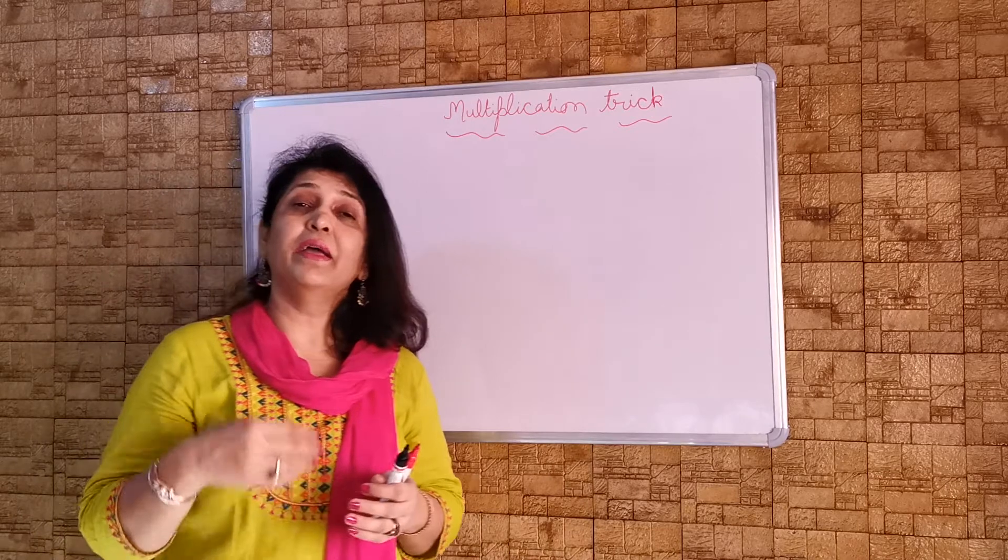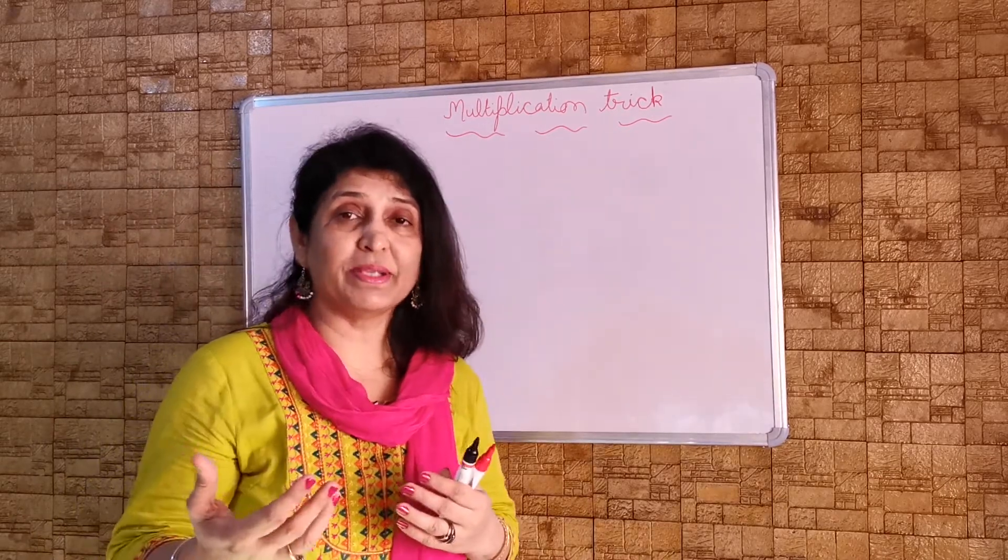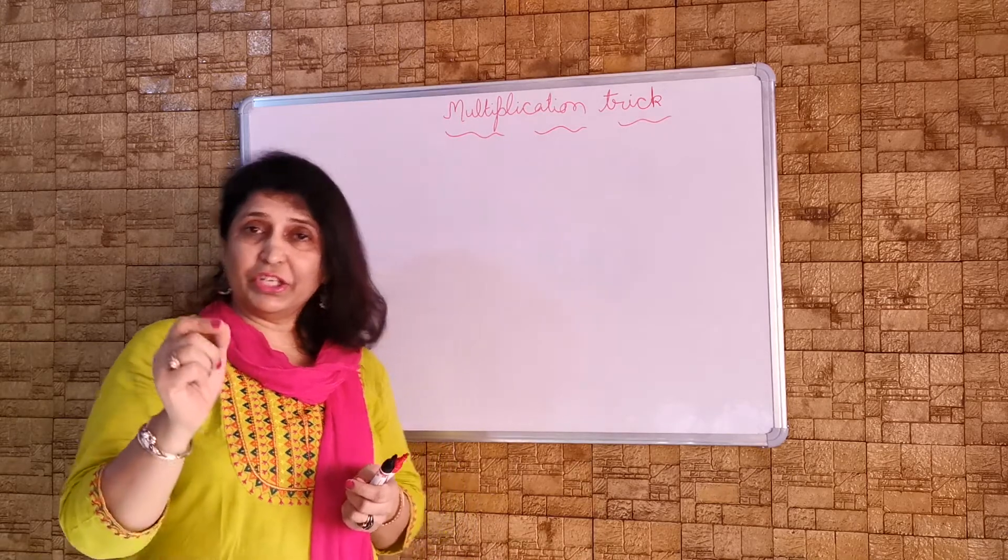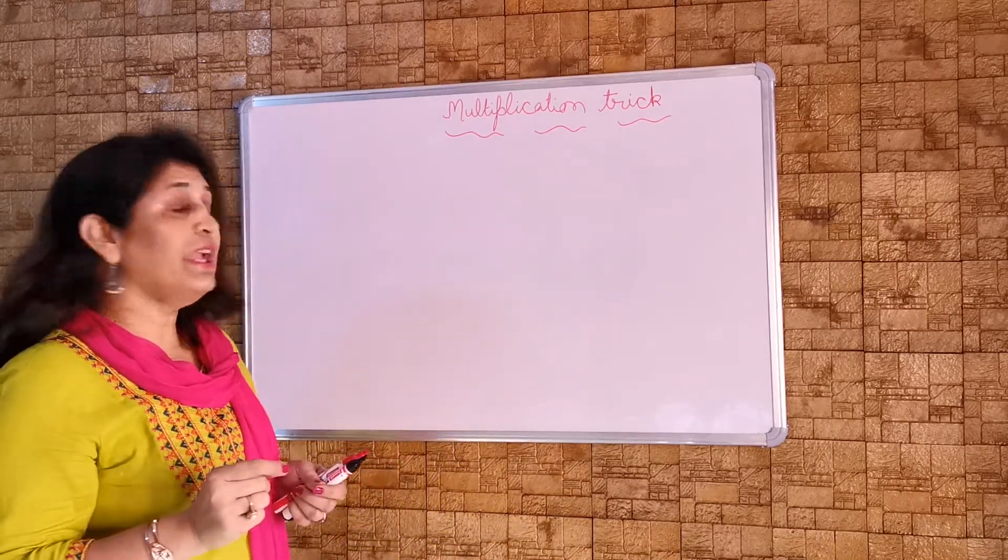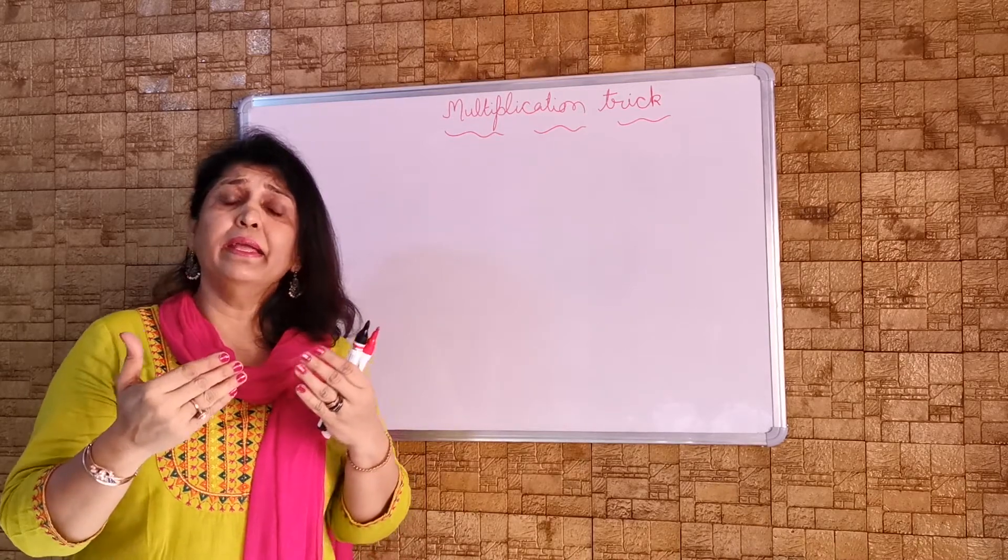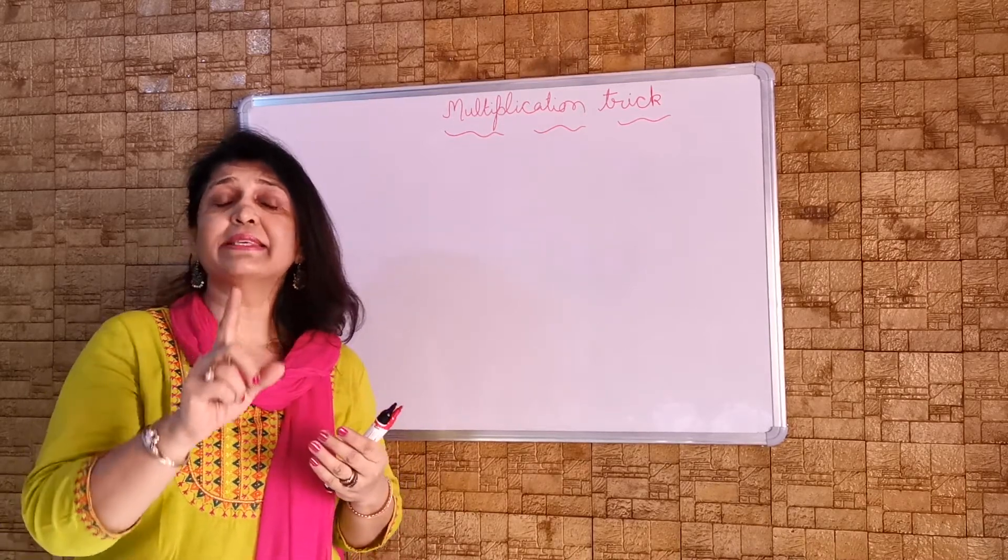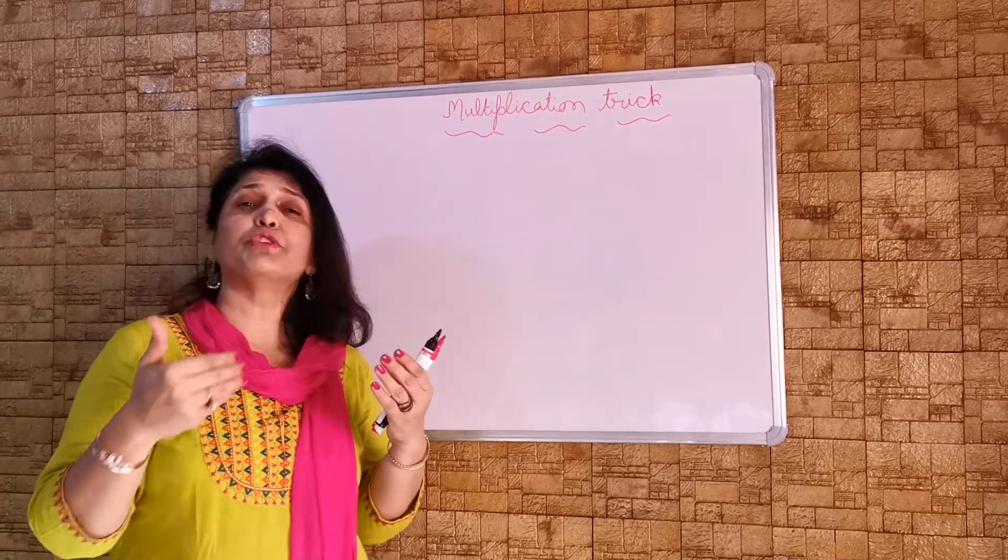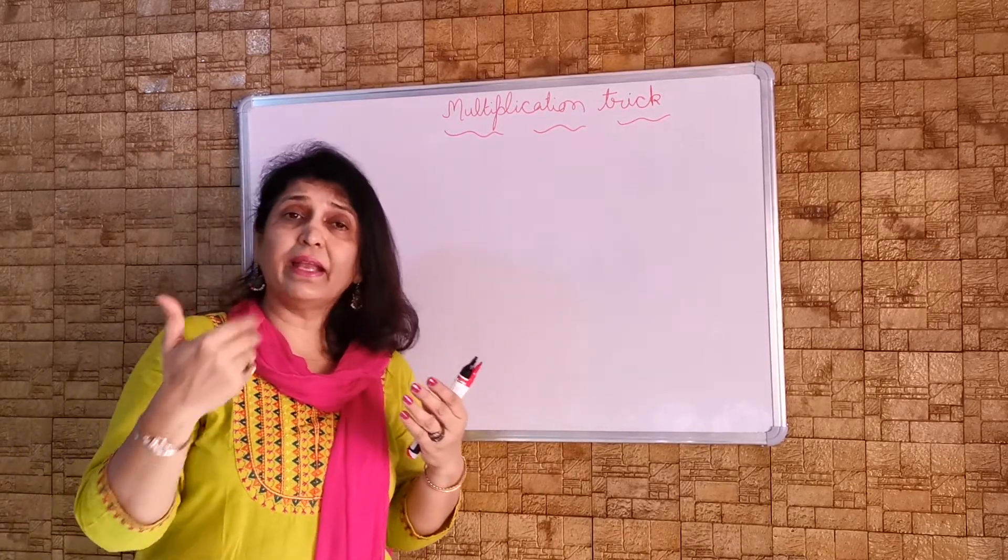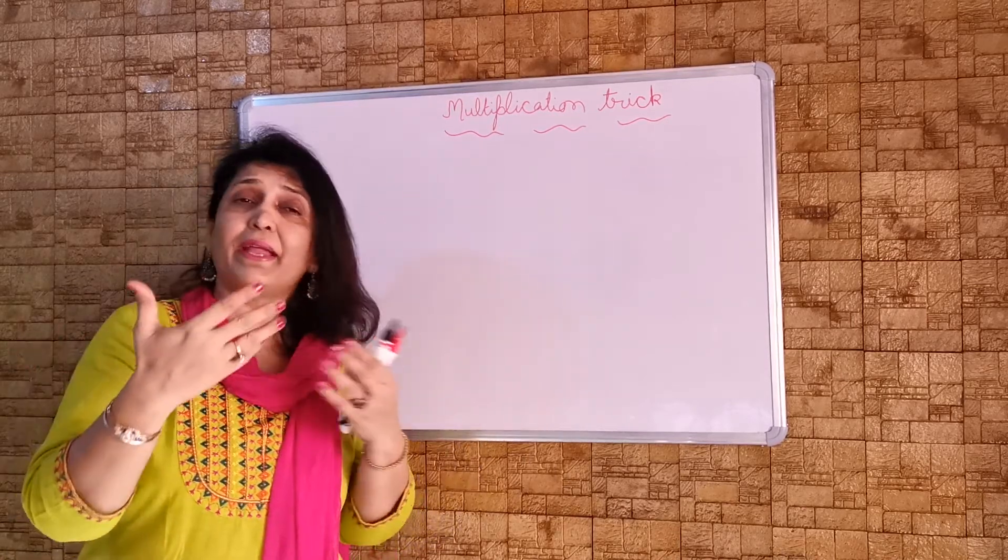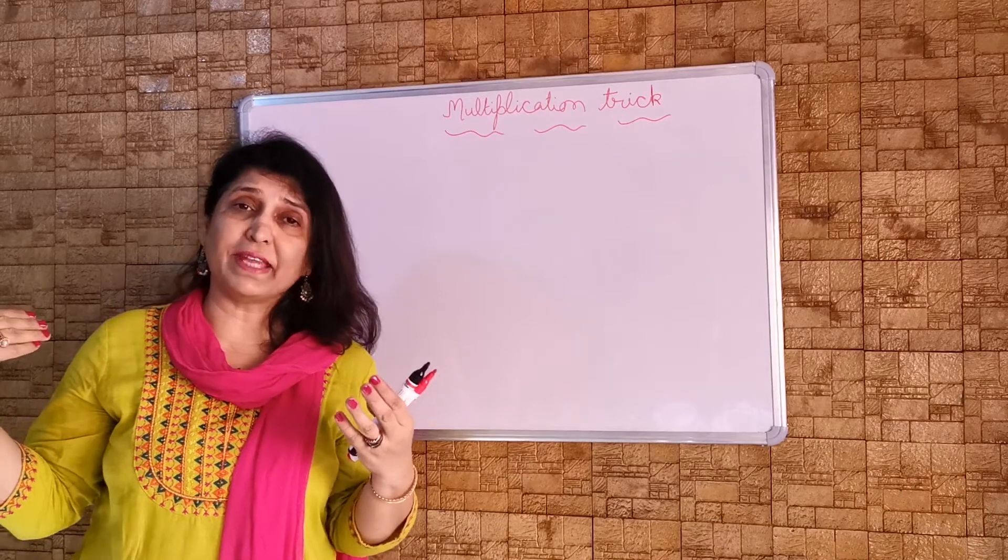But when we are dealing with the big numbers, the large numbers, it becomes cumbersome. Today I will teach you the activity in which you can multiply the sum and take the answer in one step only. When we do the multiplication, if the multiplier is of 2 digits, then there are 3 steps. If the multiplier is of 3 digits, then 4 steps. Multiplier is of 4 digits, then 5 steps.